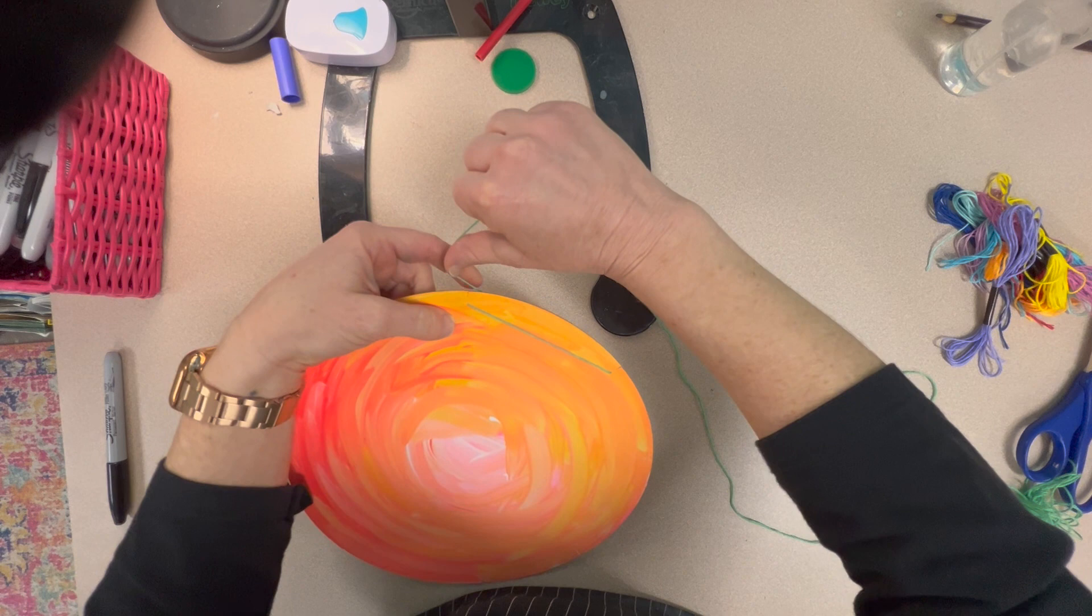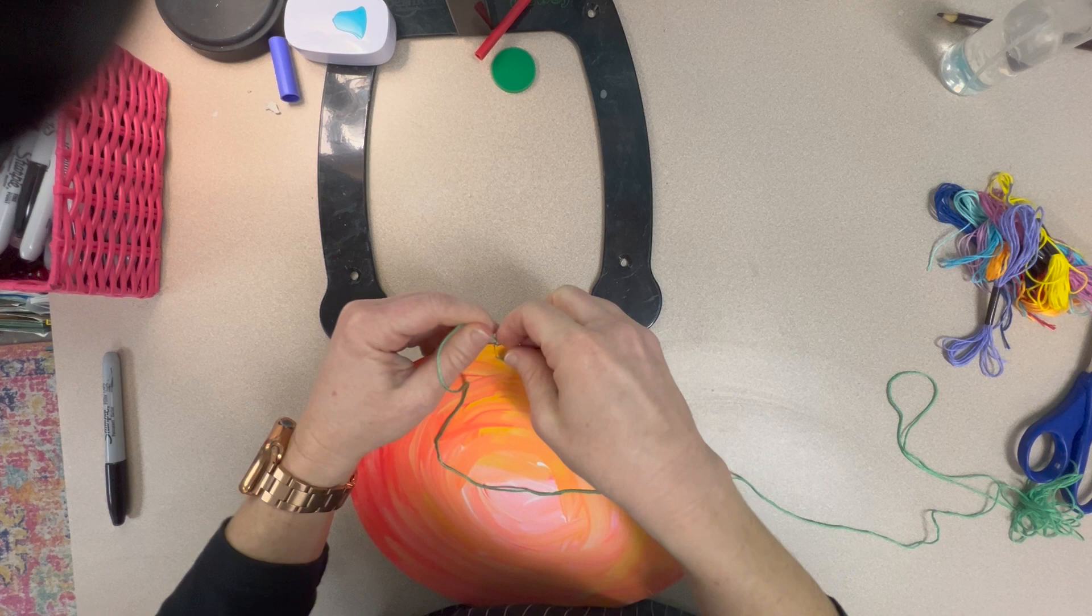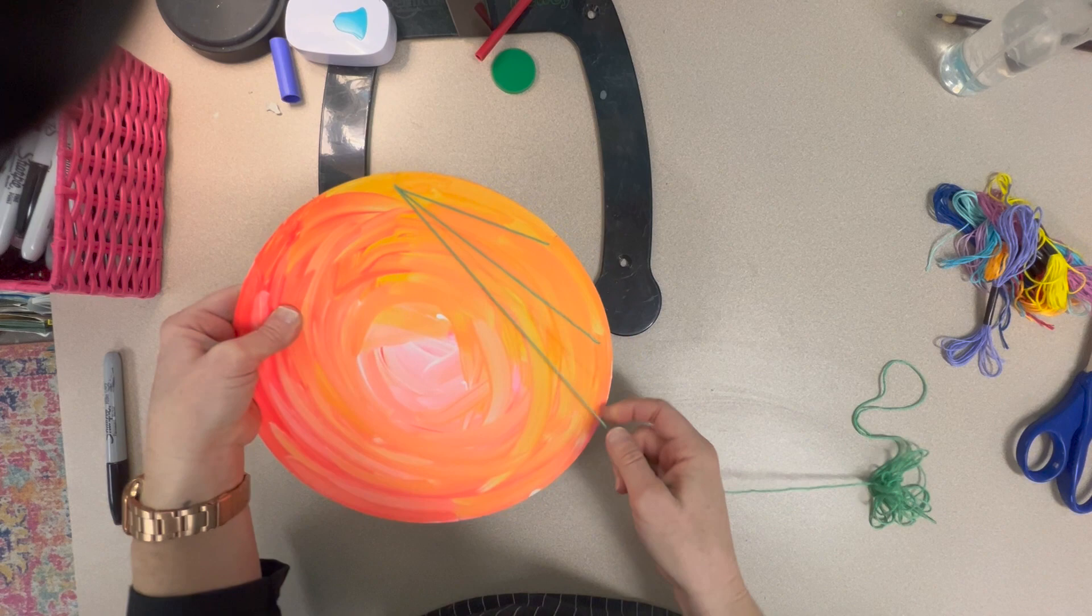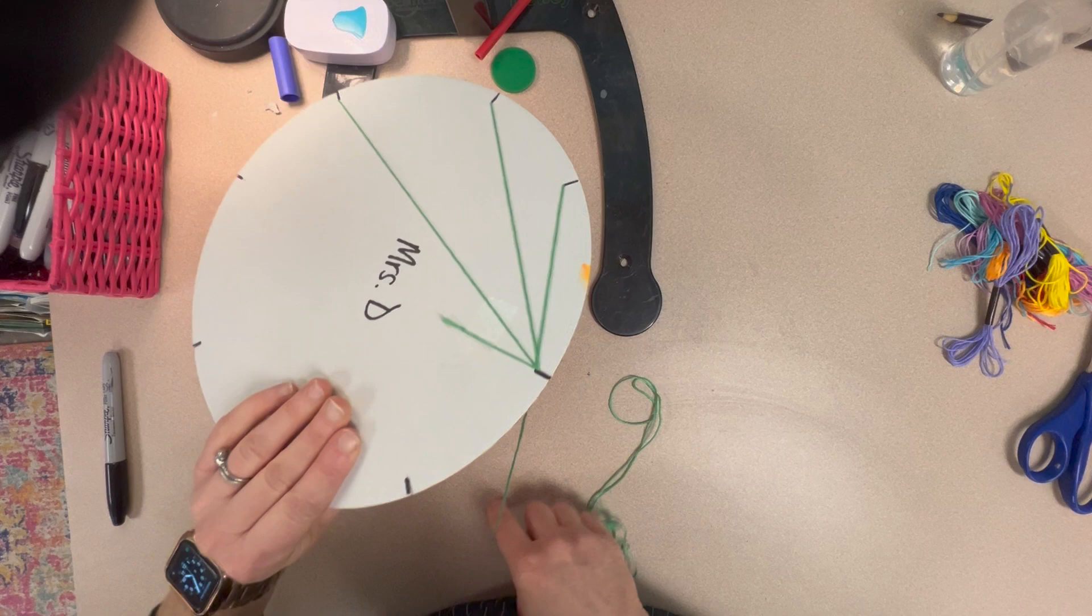And then back through that center notch. And now to the next notch and back again. So you're just going to keep feeding it back through that center notch and go all the way along the circle.